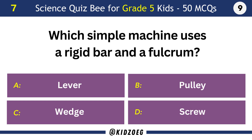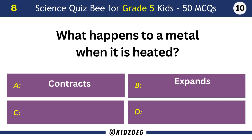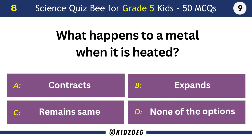Which simple machine uses a rigid bar and a fulcrum? Lever. What happens to a metal when it is heated? It expands.